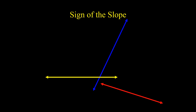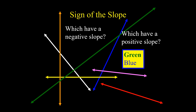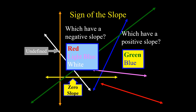What are the signs of the slope? Observe all the lines and identify: the green line and the blue line have a positive slope — they rise from left to right. The red line, the light blue line, and the white line have a negative slope — they rise from right to left. The orange line is undefined because it forms a vertical line. And the yellow line has a zero slope because it forms a horizontal line.